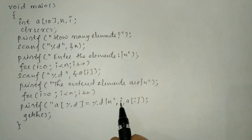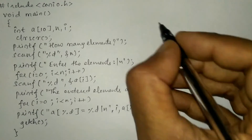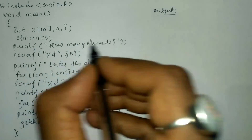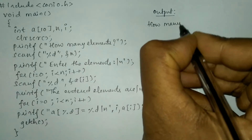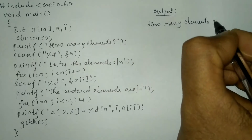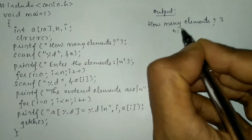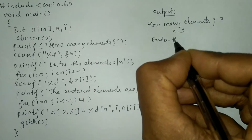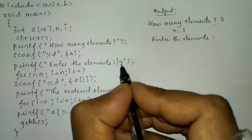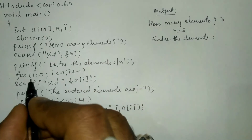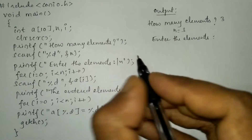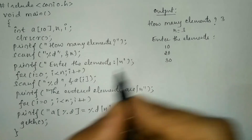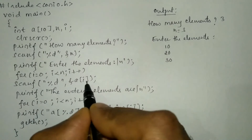Let us see how exactly this works by taking an example. Once we compile and run this program, it will ask the user how many elements. For example, entering 3 — so n becomes 3. Next it is going to ask 'enter the elements'. Because of the backslash n, the cursor moves to the next line, and using the iterative statement we are going to receive one element at a time. For example, entering 10, 20, and 30.